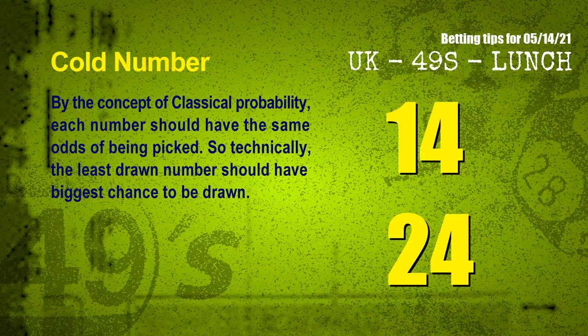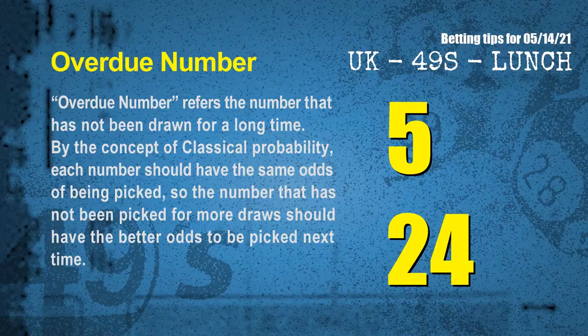In the end of this video, we have two more tips: cold numbers and overdue numbers. By the concept of classical probability, each number should have the same odds of being picked, so the least drawn number should have the biggest chance to be drawn. After counting thousands of results, the coldest two numbers for next draw are 14 and 24. Overdue numbers are numbers that have not been drawn for a long time — after counting thousands of results, the most overdue two numbers are 05 and 24.